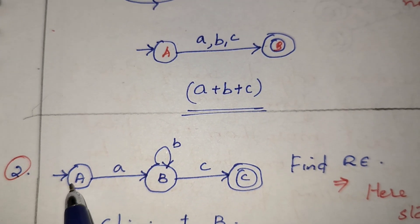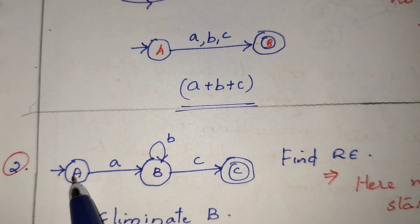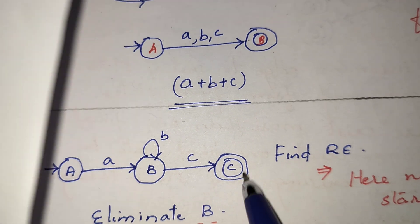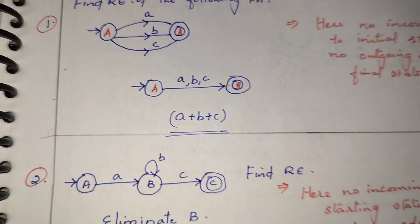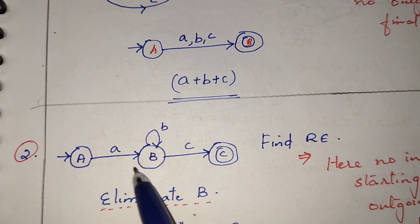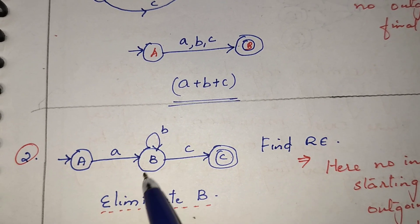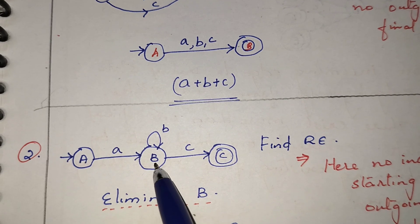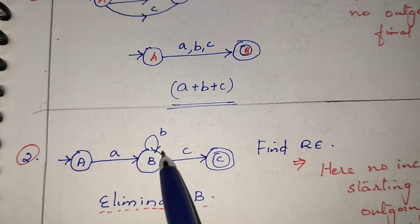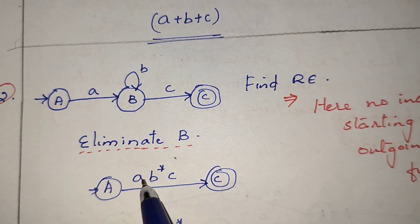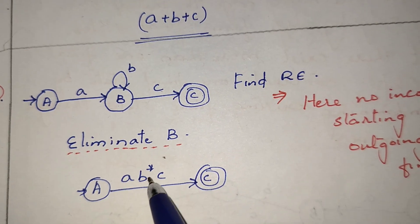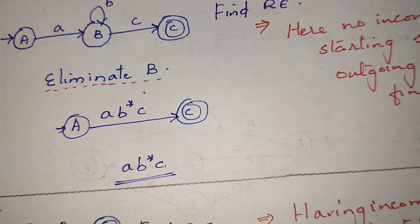For the next problem: there is a starting state, a final state, no incoming edge towards the starting state, no outgoing edge from the final state, and only one final state. We apply rule three and eliminate the intermediate state. The path shows A, then any number of B's (self-loop), followed by C. So the regular expression is AB*C.